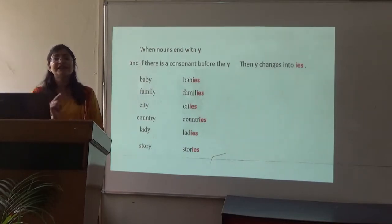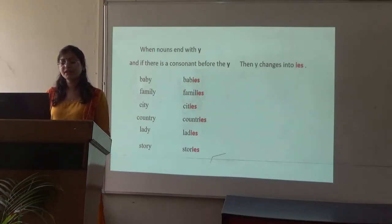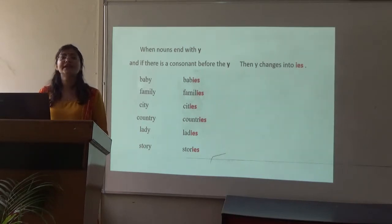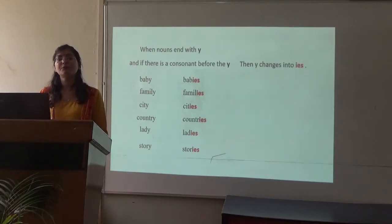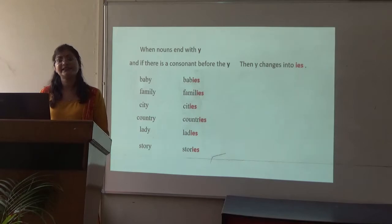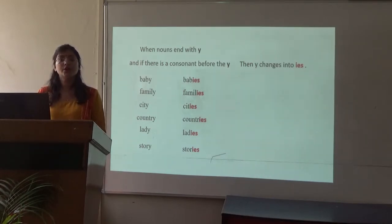Before that — there are some words that end with -y and have a consonant before the -y. Like: baby, family, city, country, lady, story. All these words end with -y but they have a consonant letter before -y. So we make the plural by removing -y and adding -ies. For example: baby → babies, family → families, city → cities, country → countries, lady → ladies, story → stories.